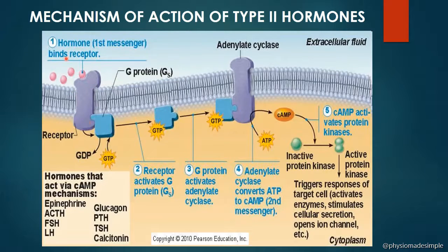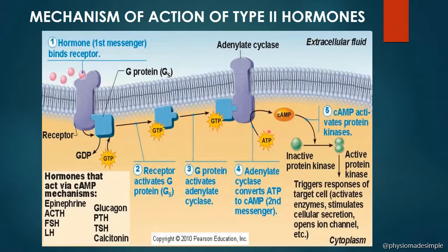When a Type 2 hormone binds to the receptor on the plasma membrane, the receptor activates. This triggers an intracellular response. The hormone itself acts as the first messenger, and inside the cell, a second messenger — cyclic AMP — is activated to carry out the hormone's action.